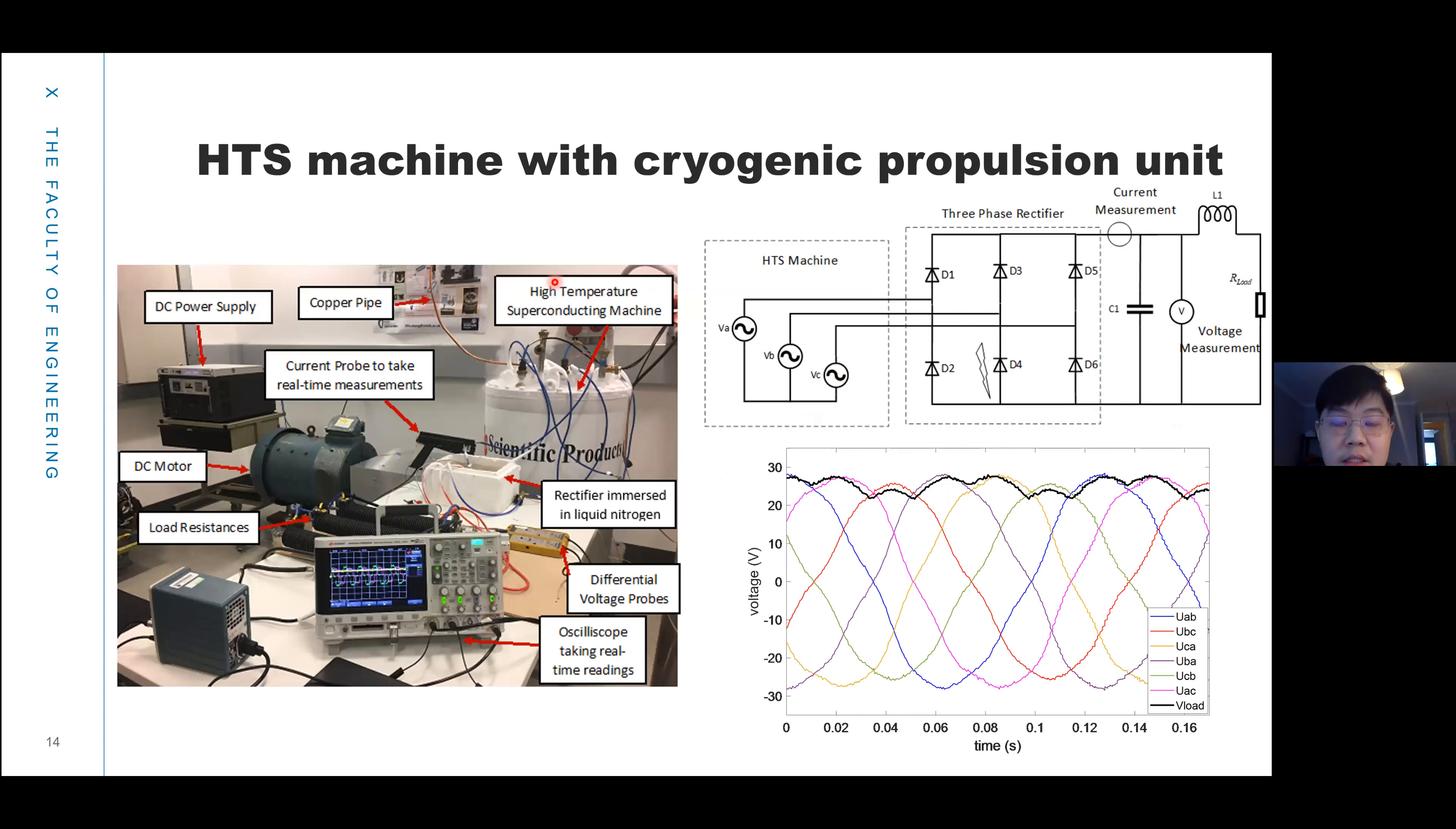This is the second experiment. We connect the superconducting machine with a cryogenic rectifier and then connect it with a resistor. In this figure, we can find the phase voltage of the superconducting machine, and the black curve demonstrates the voltage after the rectifier.